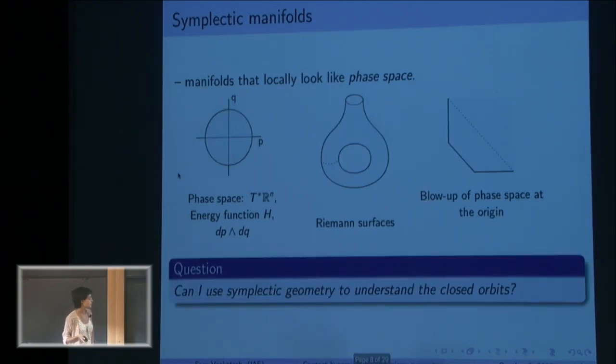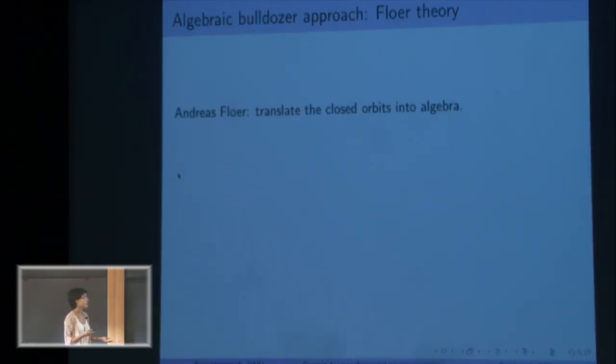I want to understand closed orbits on Hamiltonian systems using symplectic geometry. This is a hard question and it requires hard machinery. About 30 years ago, Andreas Floer came up with some hardcore algebraic machinery.